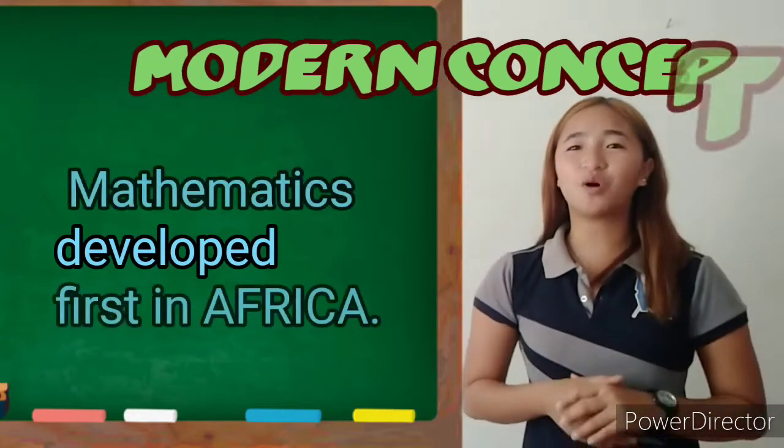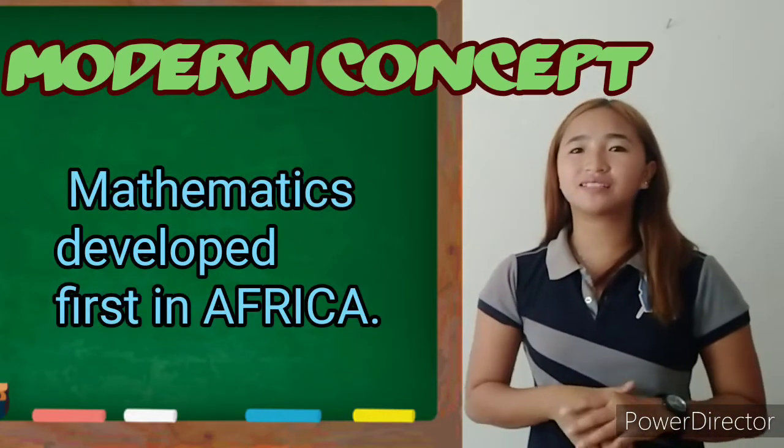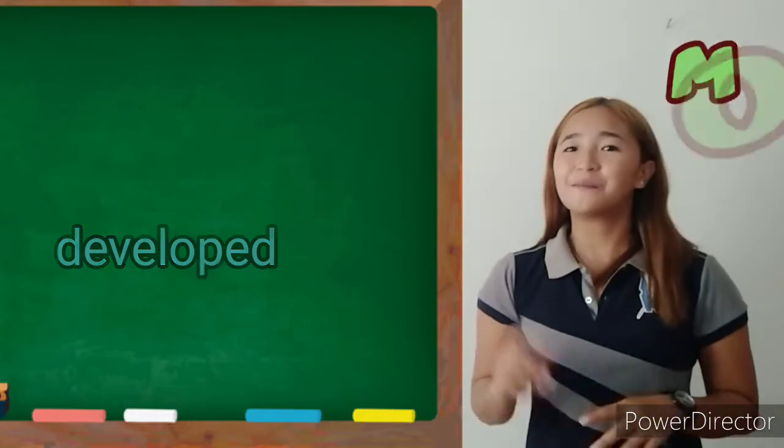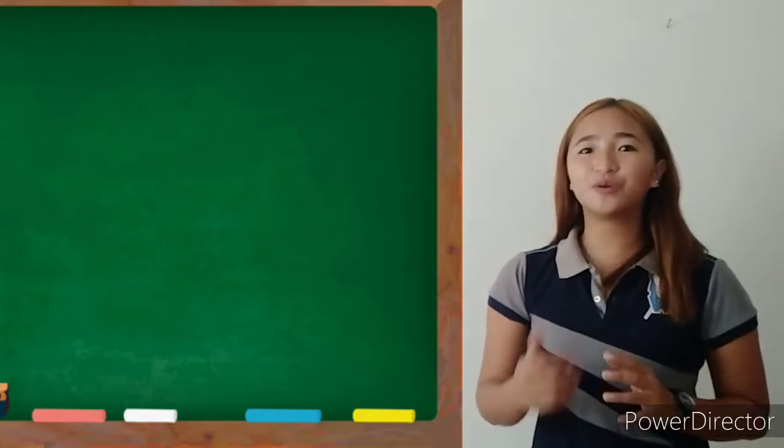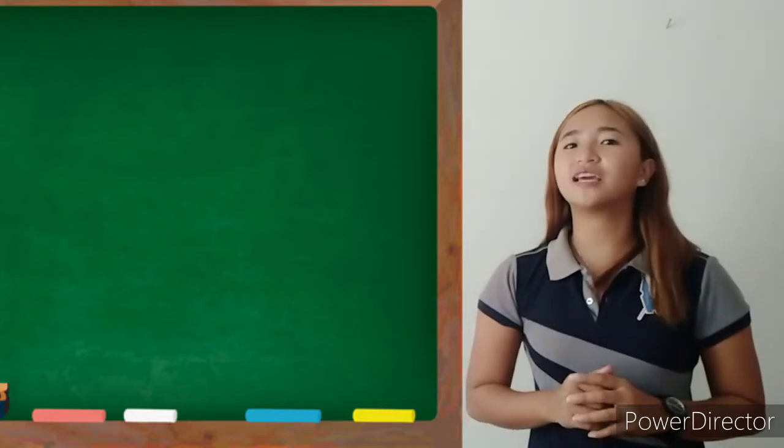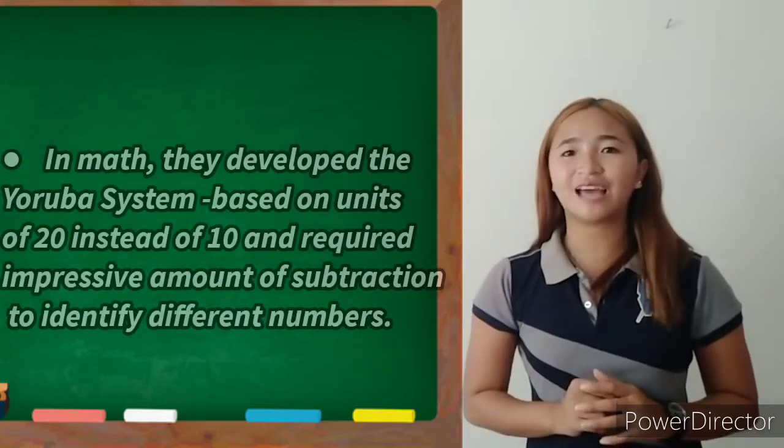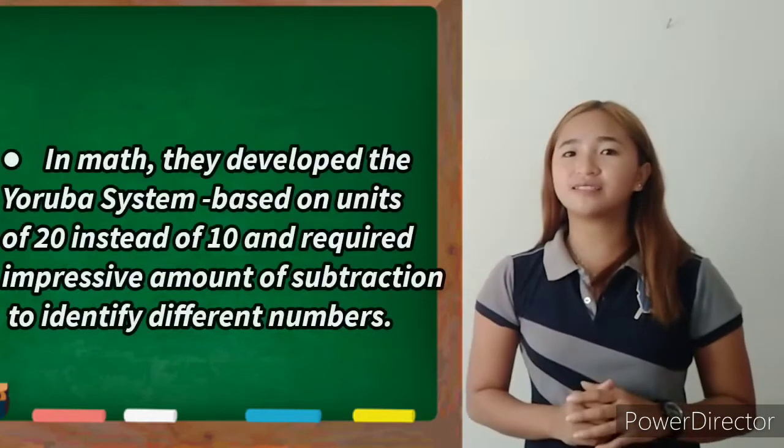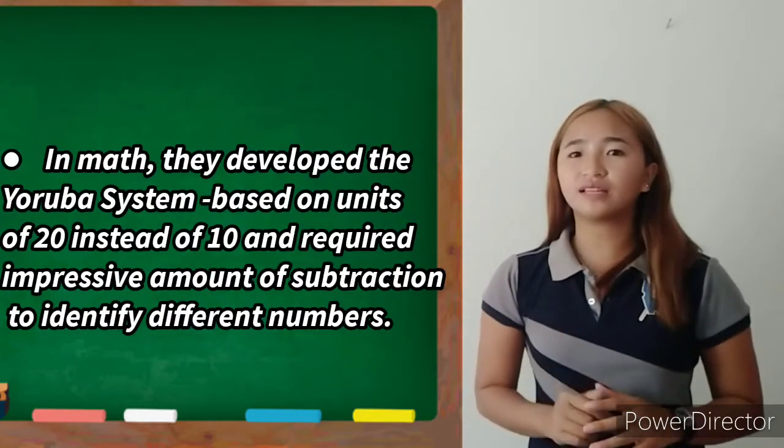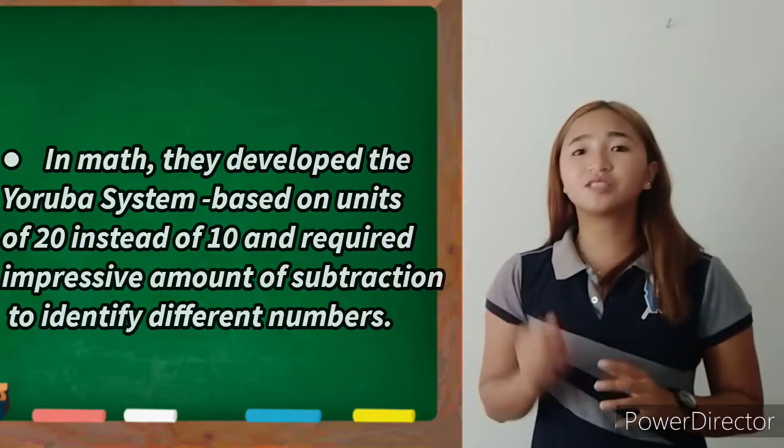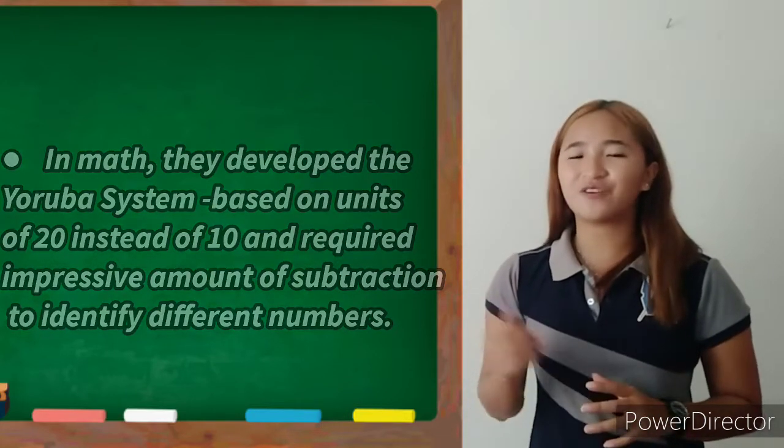In mathematics, modern concepts like the first method of counting was developed in Africa. People in present day Zaire and Ethiopia, people in what is Nigeria developed their own numeration system 8,000 years ago. The Yoruba system based on units of 20 instead of 10 and required impressive amount of subtraction to identify different numbers.